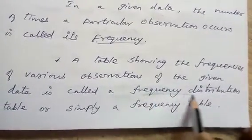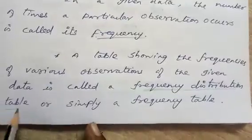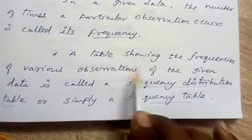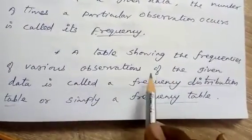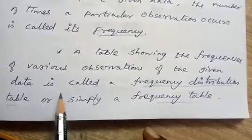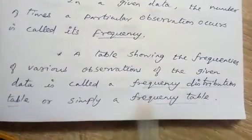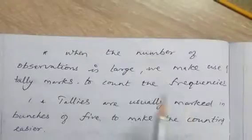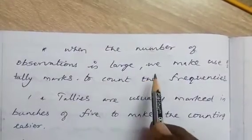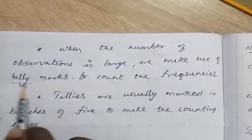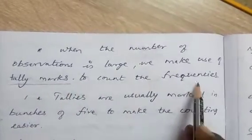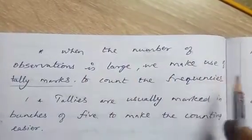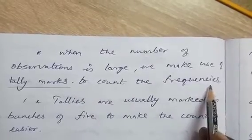A table showing the frequencies of various observations of the given data is called a frequency distribution table, or simply a frequency table. When the number of observations is large, we make use of tally marks to count the frequencies.